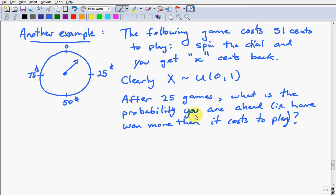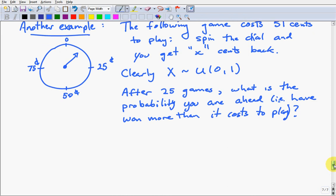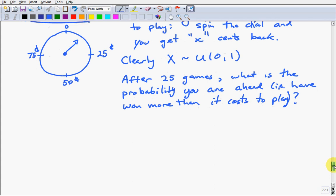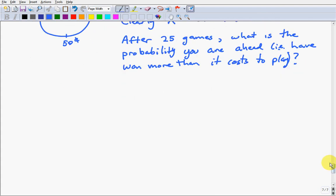After 25 games, what's the probability that you're ahead? That is, that you've won more than it costs to play. So there's a couple ways you could think about this, and it's a reasonably straightforward question to solve using the central limit theorem once you've figured out how to phrase it as a question involving either a total or an average, because that's what the central limit theorem does. So we could think of this in terms of an average.